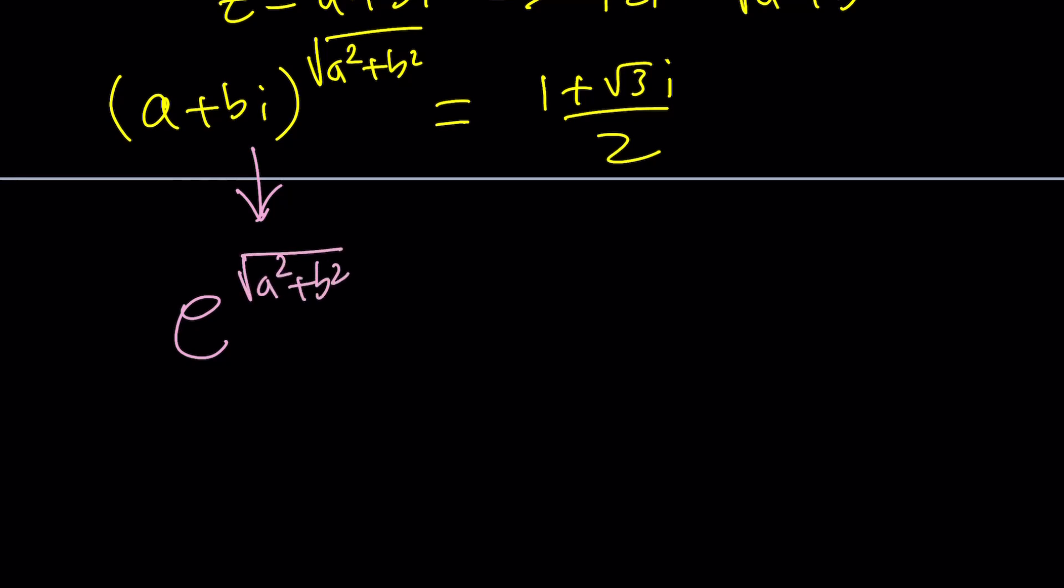Square root of a squared plus b squared, multiply by ln of a plus bi. This expression can also be written in polar form. Its modulus is one and argument is pi over three because tangent is root three and it's in the first quadrant, so we can write it like this.